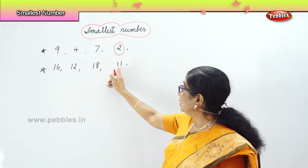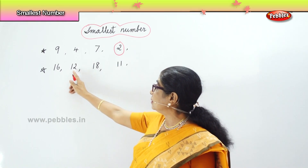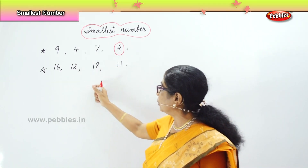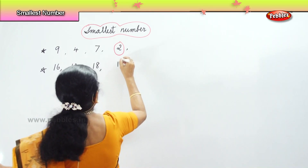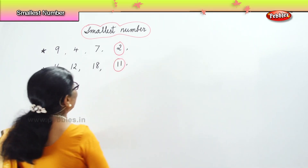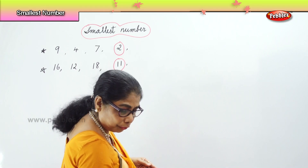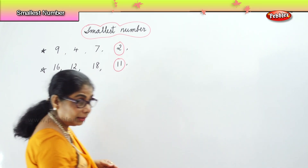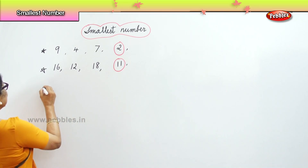Yes, 11 is the smallest among these. Because 11 is 10 and 1 more; 12 is 10 and 2 more; 16 is 10 and 6 more. So, 11 is the smallest. Now, I'll give you another set of numbers for you to identify the smallest number.